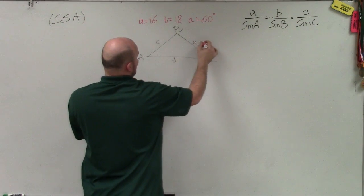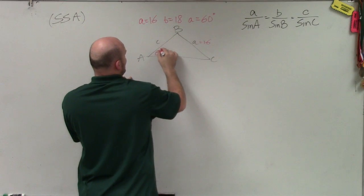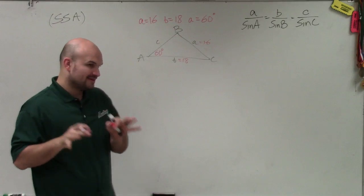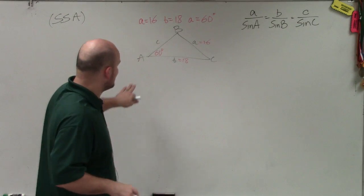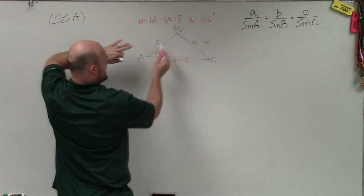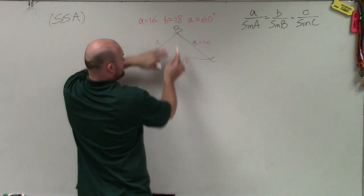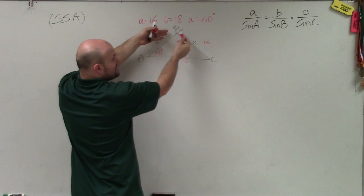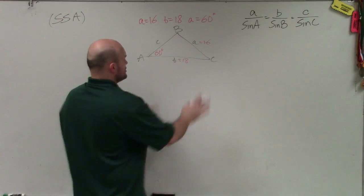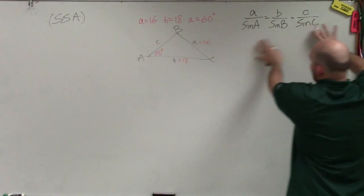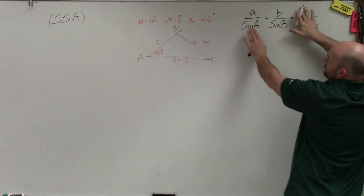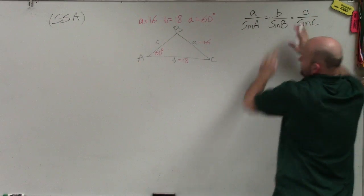So a is going to be 16, angle A is 60 degrees, and b is equal to 18. By doing this, you can see that I now have a ratio of a over sine of A and b over sine of B, where my missing value is going to be angle B. Rather than using all side lengths, I'm really only going to be focused on a over sine of A equals b over sine of B.